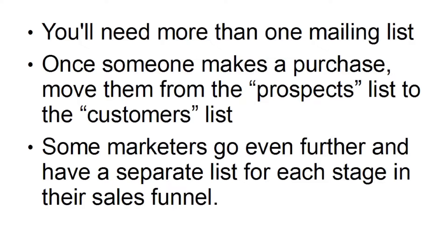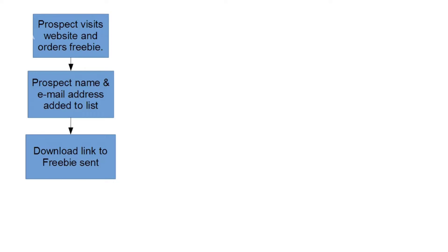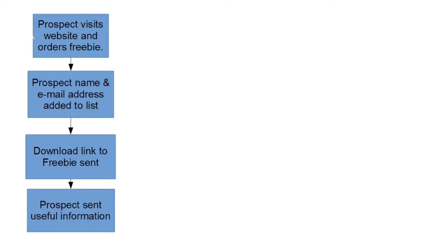Now let's just take a look at how the whole process works. The first thing that happens is a prospect visits your website and orders a freebie. They go to your squeeze page and enter their name and email address. That gets added to the mailing list. Then they get sent the download link to the freebie. Then the prospect is sent lots of useful information.